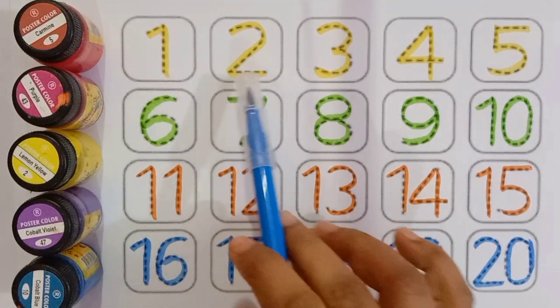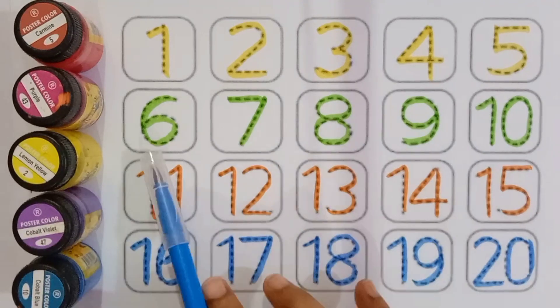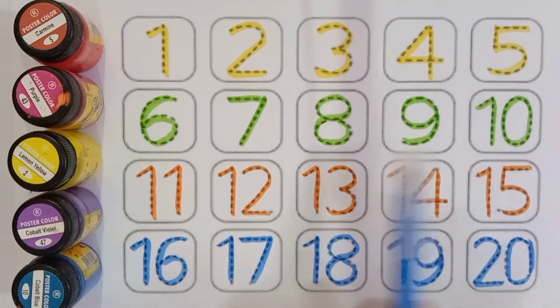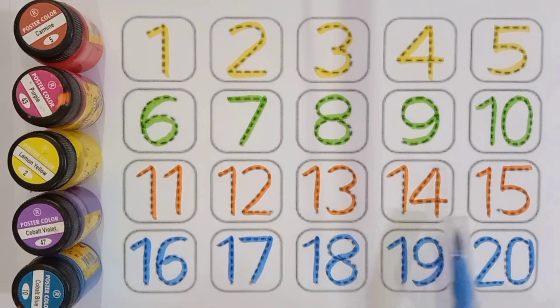One, two, three, four, five, six, seven, eight, nine, ten, eleven, twelve, thirteen, fourteen, fifteen, sixteen, seventeen, eighteen, nineteen, twenty.